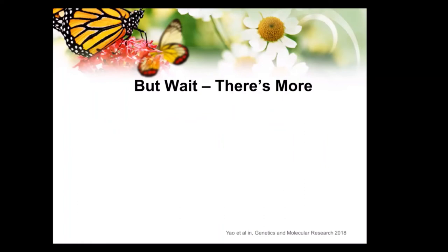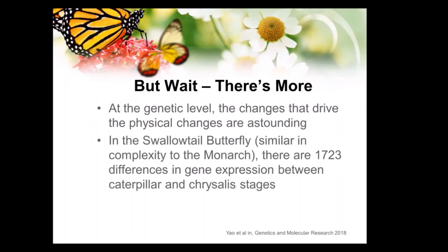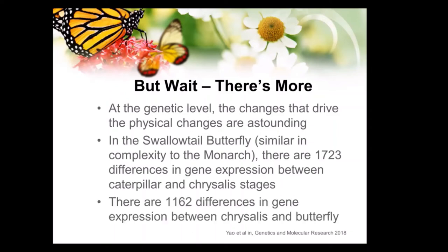Here are some things not in the video but you can find online. At the genetic level, the changes driving these physical changes are amazing. There is a paper on swallowtail butterflies that lists over 1,500 differences in gene expressions — these are the gene expressions that trigger the changes from a caterpillar going into the chrysalis stage to start that reformation. And while it's in there, there are almost 1,200 more gene expression changes between the chrysalis and butterfly stages. All these changes are necessary to end up with that transformation from caterpillar to chrysalis to butterfly. If you had one or two fewer, it would be incomplete and non-functional. Which one couldn't you do without?